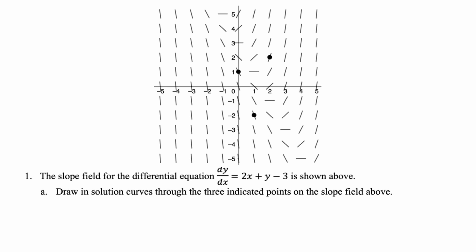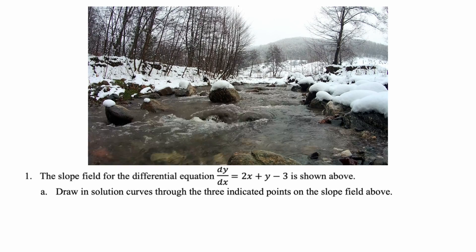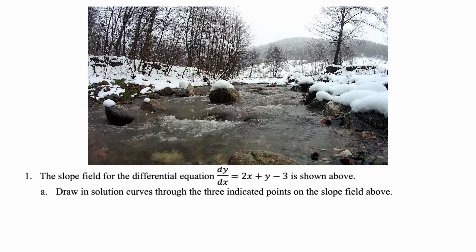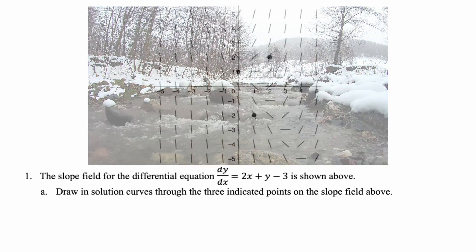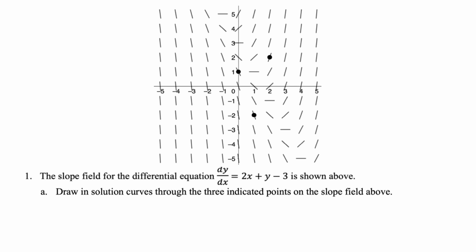What we want to do is imagine that this slope field is just flowing water. You're at the point, you drop something in, and you just see where it carries. I'm going to start with the point at (0, 1). At the point (0, 1), it looks like this is a linear solution. I'm just going to follow the contours of the slope field and sketch in a linear solution there.